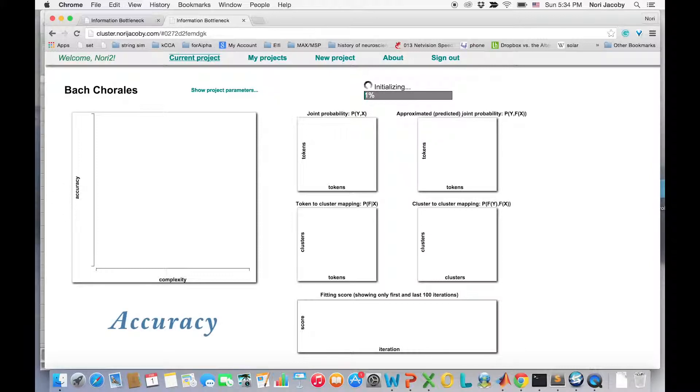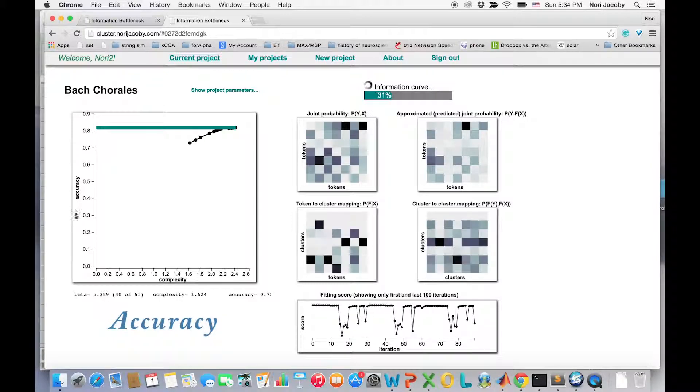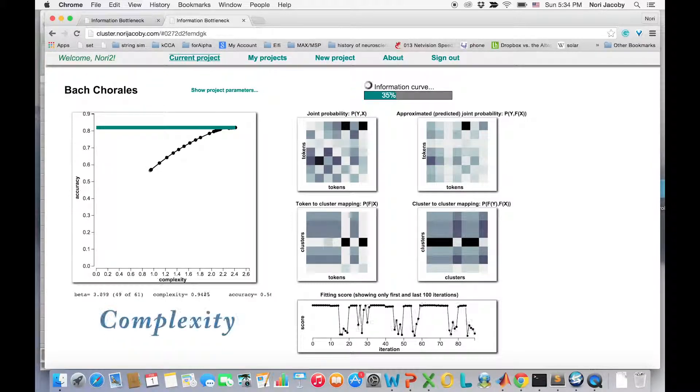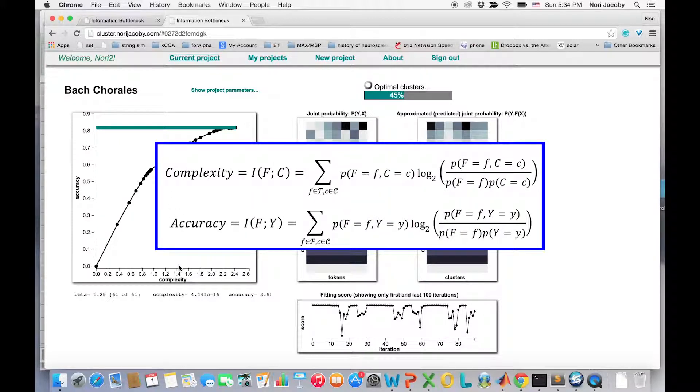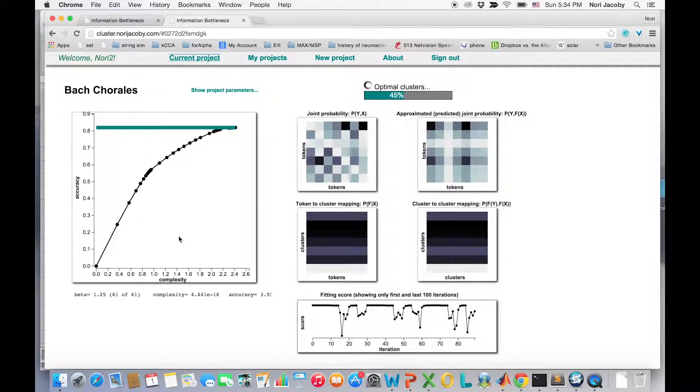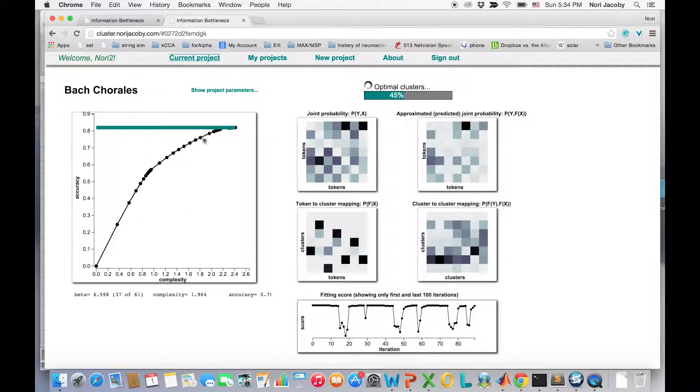The applet is now computing the optimal categorization of chords according to two criteria: accuracy, meaning how well the categorization describes the musical surface, and complexity, the efficiency of the categorization according to Occam's razor. These two concepts are formally defined in our paper using information theory. The black curve represents categorization that gives the best accuracy for a given complexity.